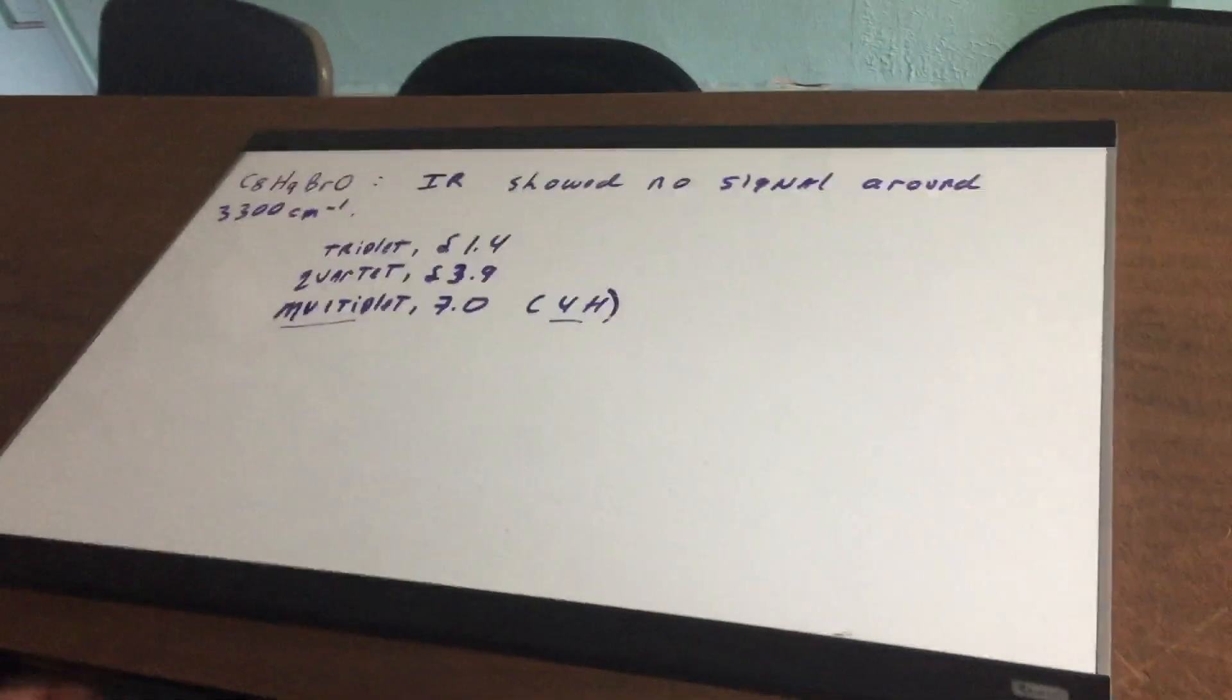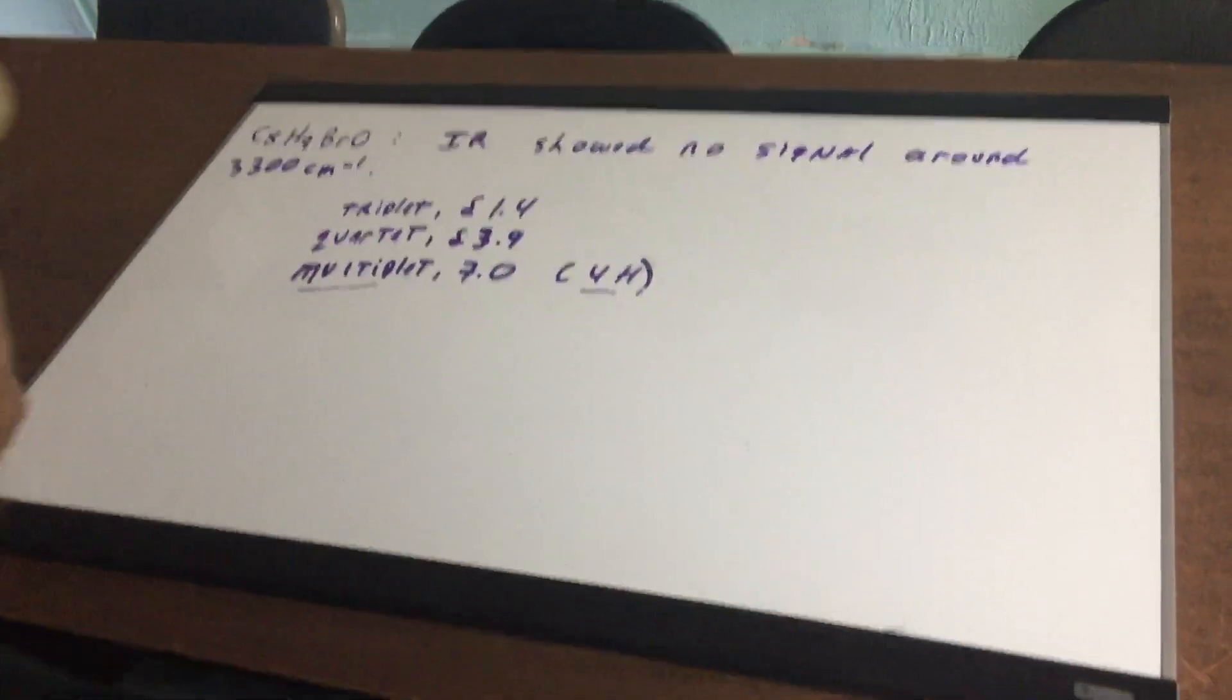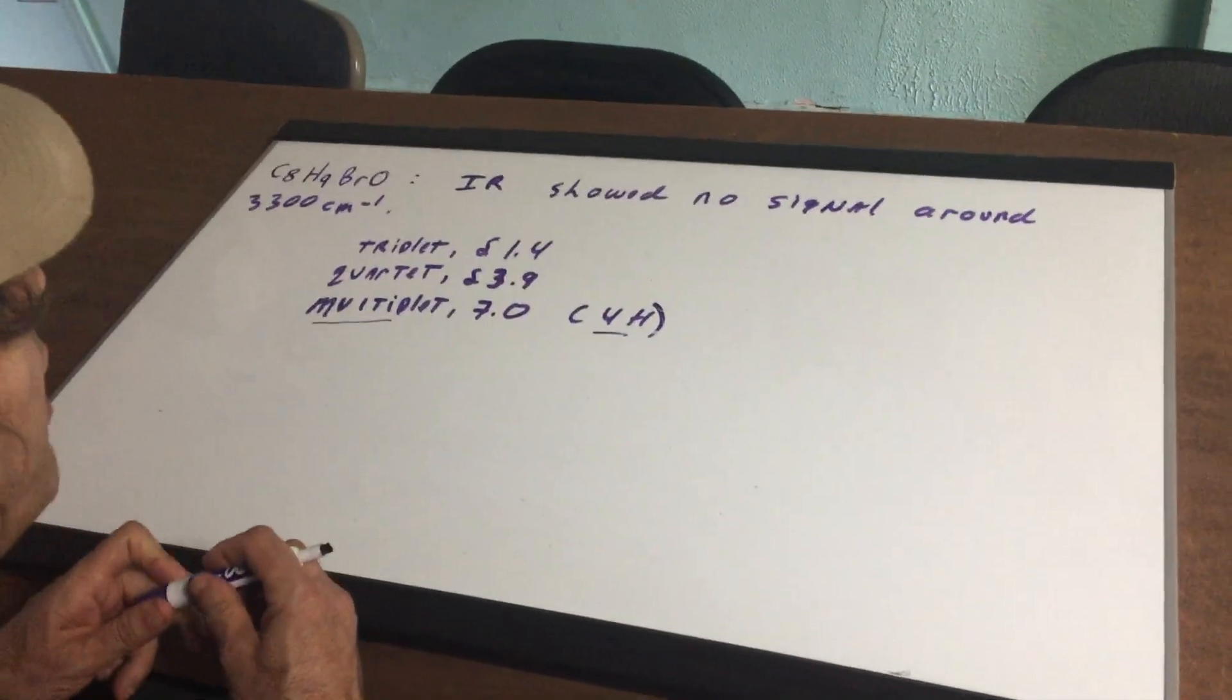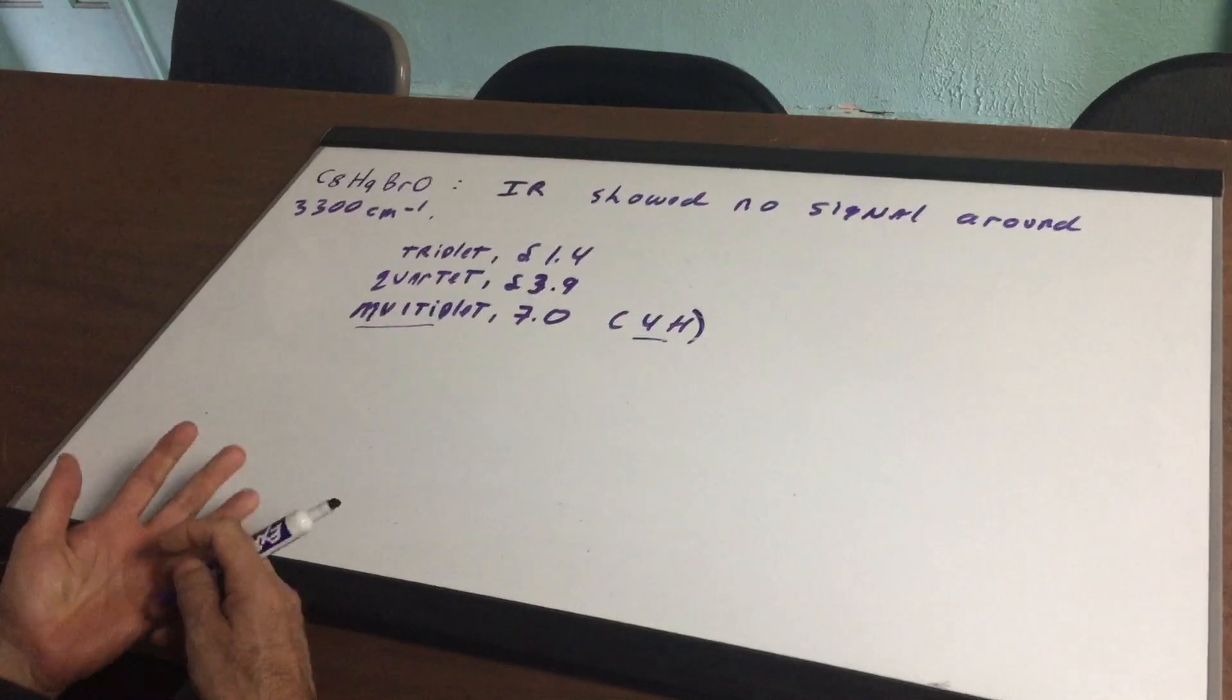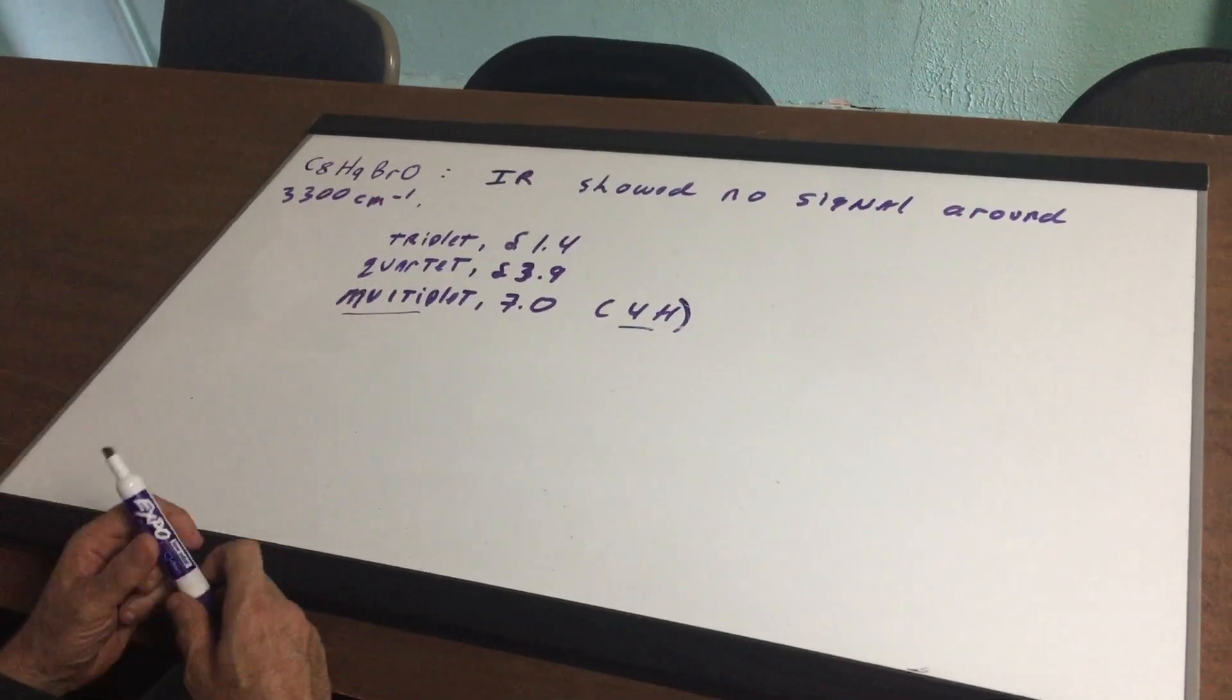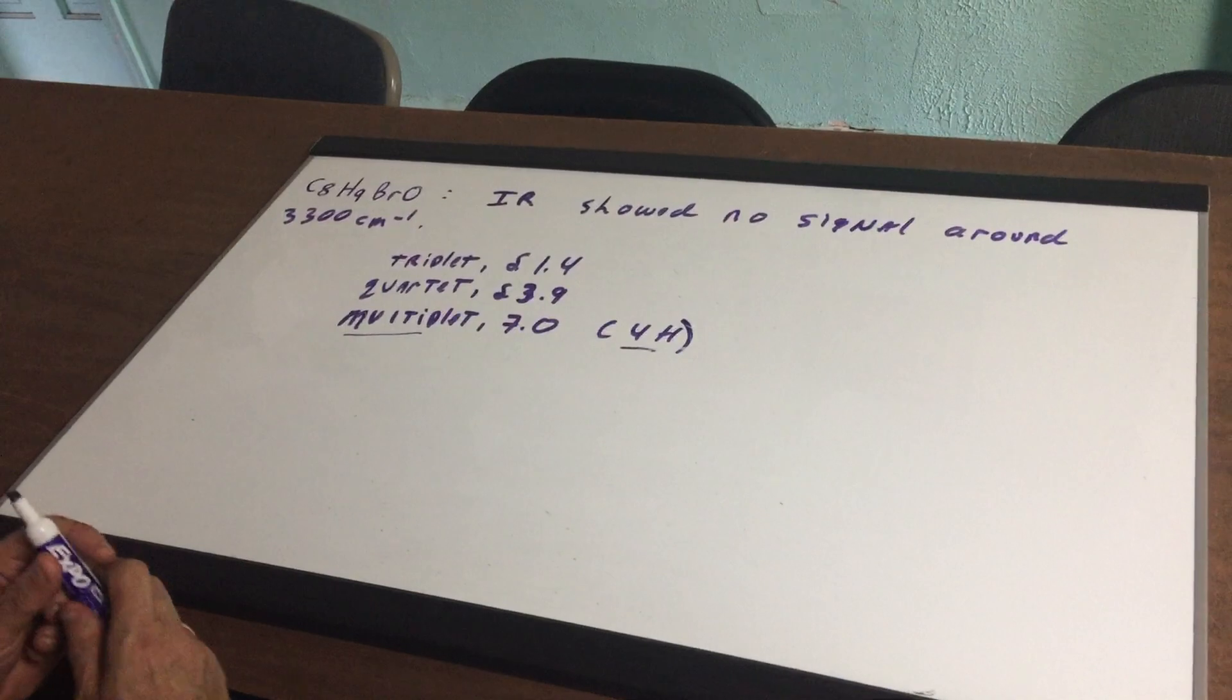What I have here is a C8H9BrO compound and it says that the IR show no signal around 3300 and I give you the NMR data of a triplet, quartet, and multiplet.